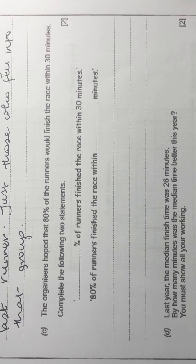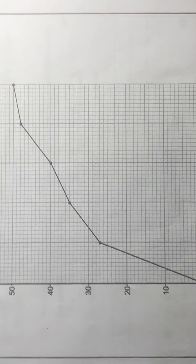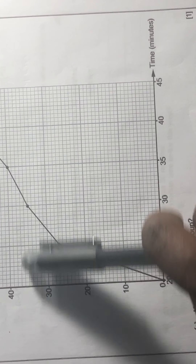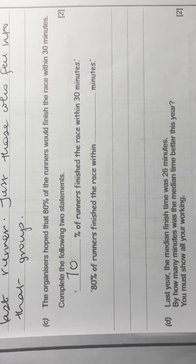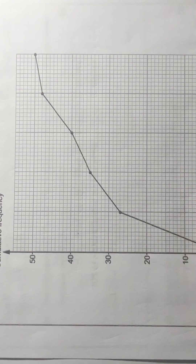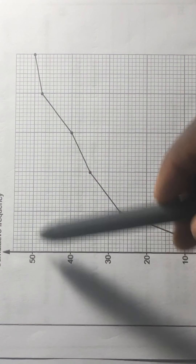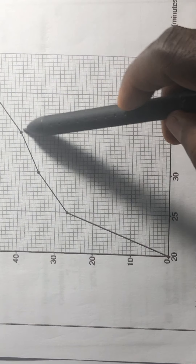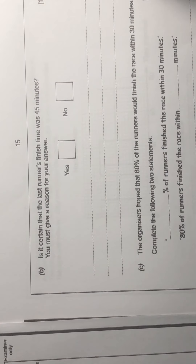Question 6c: The organizers hope 80% of runners finish within 30 minutes. Reading the graph at 30 minutes, we get 35 out of 50 runners, which is 70%. For the second part, 80% of 50 runners is 40. Following the cumulative frequency up to 40 and reading across gives approximately 35 minutes.